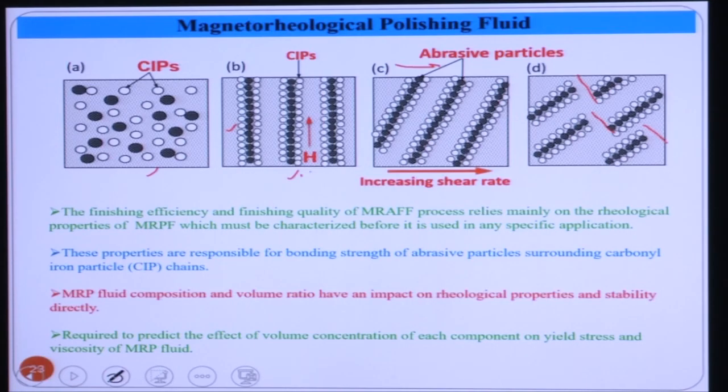Finishing efficiency basically depends on the rheological properties of the MR fluid. Higher yield stress means higher strength, and these properties are responsible for the bonding strength of abrasive particles surrounding the CIP particle chains. More strength in the fluid means more bonding strength for the abrasive particles, which then removes surface undulations in a better way. The fluid composition and volume ratio have an impact on these rheological properties.